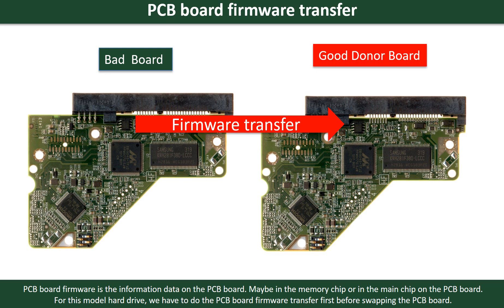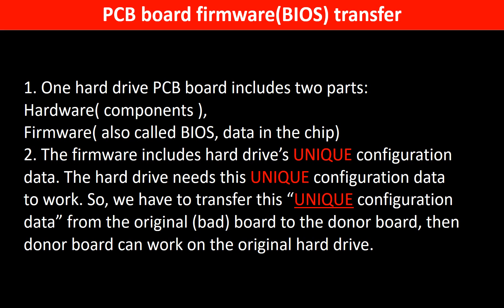PCB board firmware is the information data on the PCB board. It may be in the memory chip or in the main chip on the PCB board. For this model hard drive, we have to do the PCB board firmware transfer first, then we swap the PCB board. Otherwise, the new board will not work on the original hard drive. Why do we have to do the PCB board firmware transfer? Because for this model hard drive, one PCB board includes two parts: hardware and firmware. The PCB board firmware includes the hard drive's unique configuration data, and the hard drive needs this unique configuration data to work. So we have to transfer this unique configuration data from the original board to the donor board. Then the donor board can work on the original hard drive.